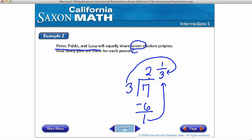Okay, so I have two whole pies for each person, and then there's one piece of the three pieces altogether left over. So my answer, then, is each person gets two and one third chicken pot pies.